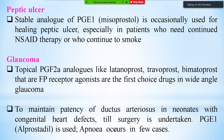The stable PGE1 analogue misoprostol is occasionally used for healing peptic ulcers, especially in patients continuing NSAIDs. PGF2α analogues like latanoprost, travoprost, and bimatoprost — FP receptor agonists — are first-choice drugs in wide-angle glaucoma. PGE1 (alprostadil) is used to maintain patent ductus arteriosus in neonates with congenital heart defects until surgery, though apnea is a side effect.